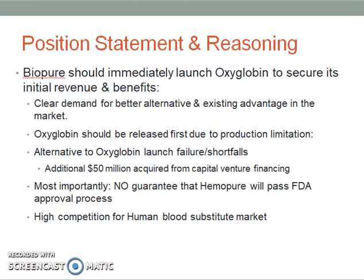Based on the clear demand for a better alternative for animal blood transfusion, as well as existing advantages in the animal blood substitute market, BioPure should immediately launch Oxyglobin in order to secure its initial revenue and benefits. BioPure only has a single manufacturing facility where only one product can be produced at a time, so it is practical to release and manufacture Oxyglobin first to accommodate the production of Humapure after its FDA approval.